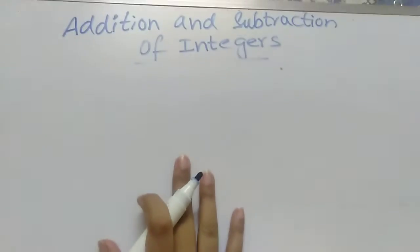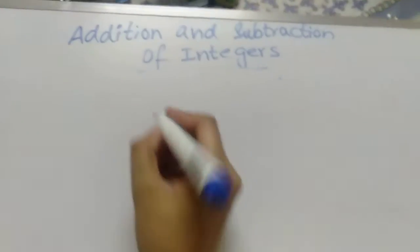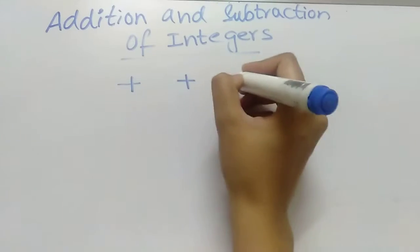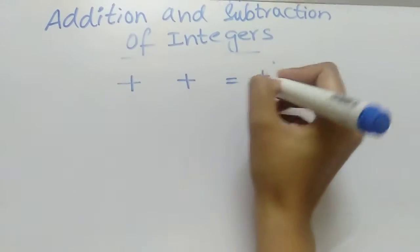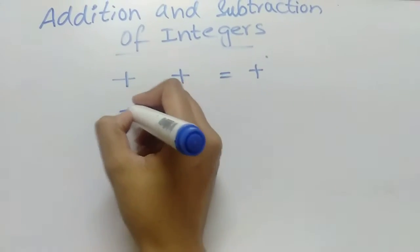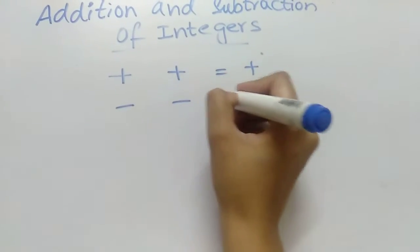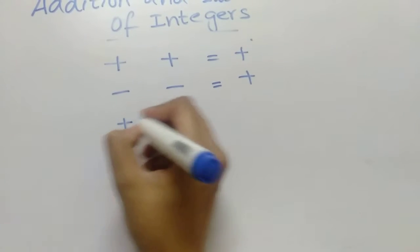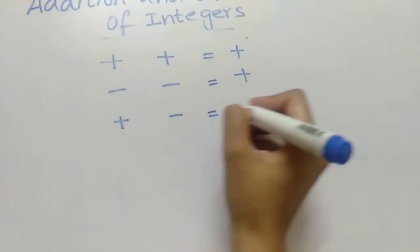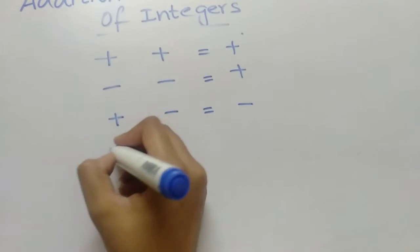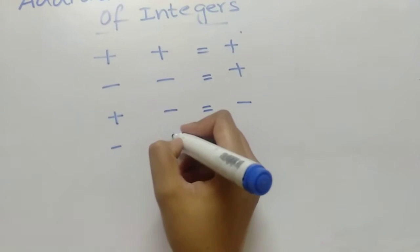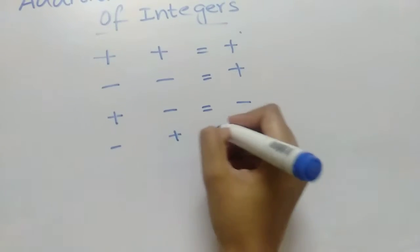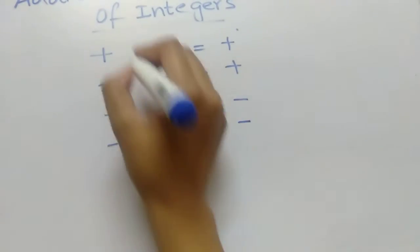Before doing this topic we should know that plus plus is plus, and minus minus is plus. And when we multiply plus minus it's minus, and when we multiply minus plus it's minus.